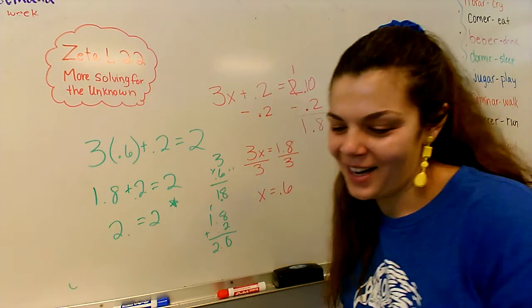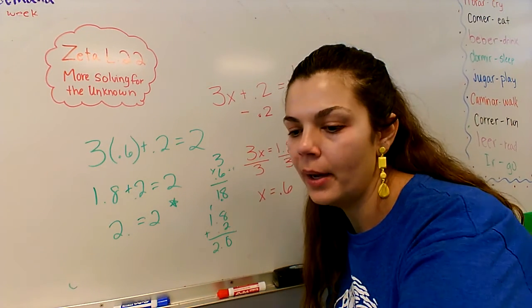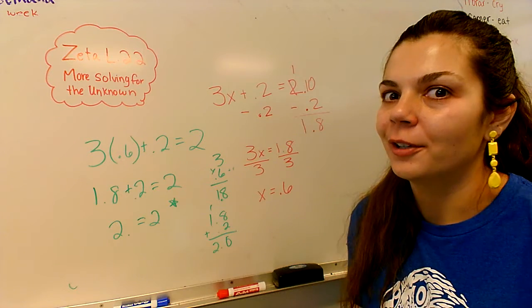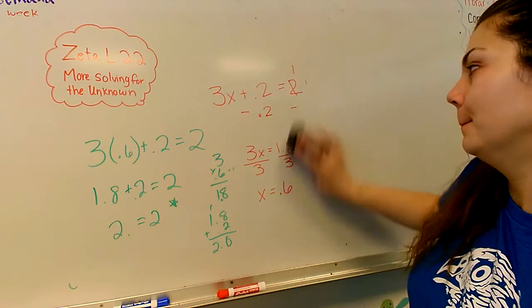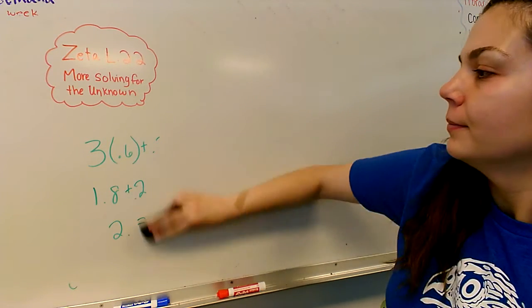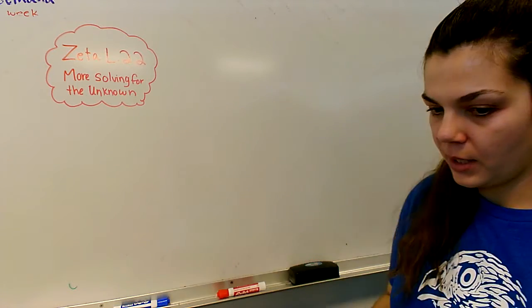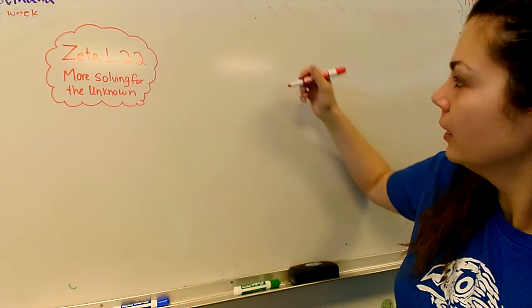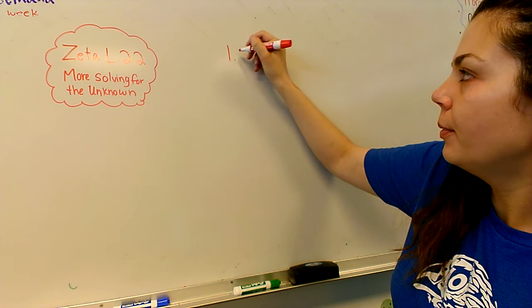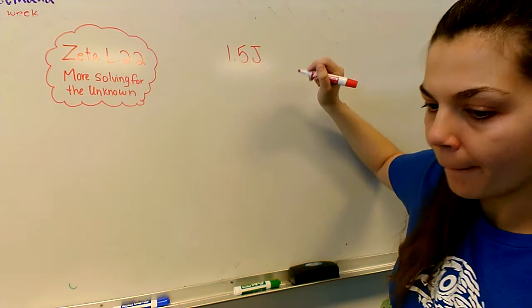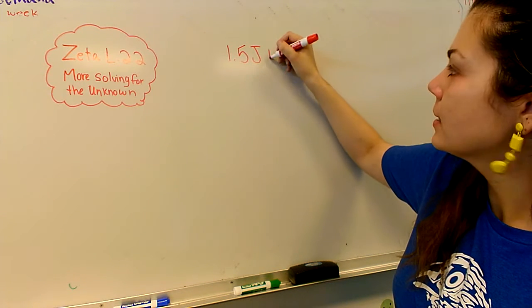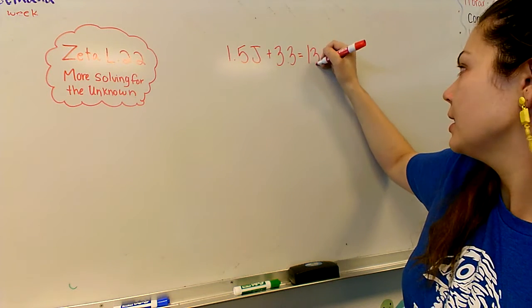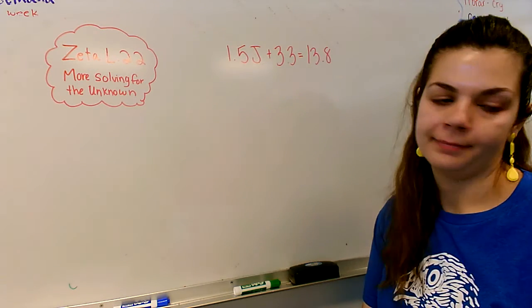Yeah. All right, it works. Okay. Now what about if all of the parts of the problem are decimals? Our next one is 1.5J plus 3.3 equals 13.8.